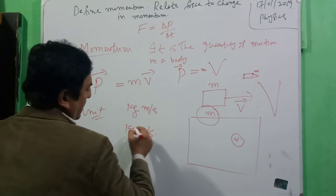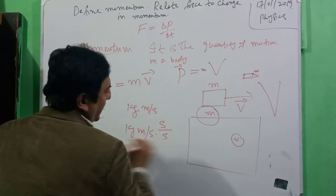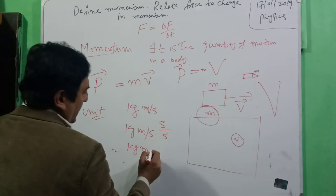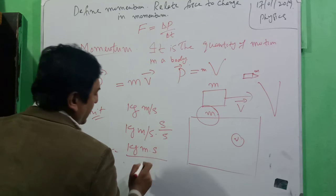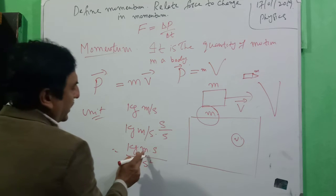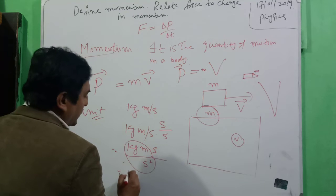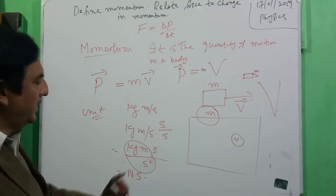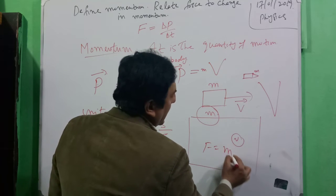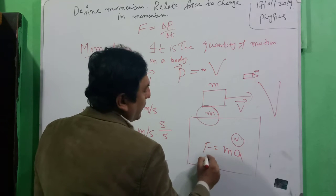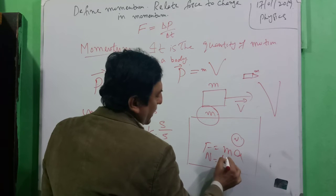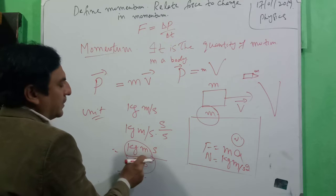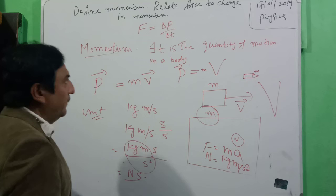Another unit of momentum: if we multiply kilogram meter per second by second and divide by second, we get kilogram meter per second squared multiplied by second, which gives Newton times second. We know that force equals mass times acceleration. The unit of force is Newton, mass is kilogram, and acceleration is meter per second squared — so Newton equals kilogram meter per second squared. Therefore, another unit of momentum is Newton second.